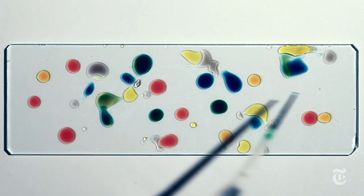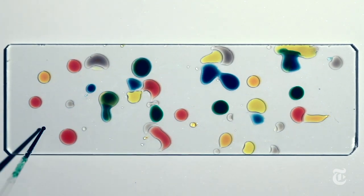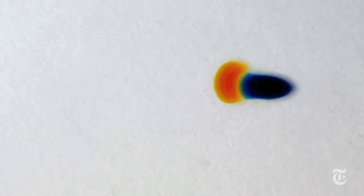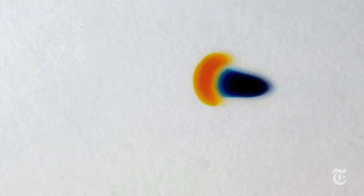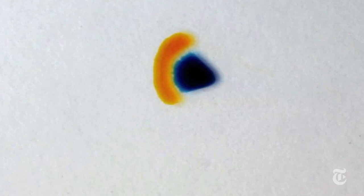Each droplet is composed of two fluids. The coloring is just to help you see what's going on. The different fluids evaporate at different rates, and they have different surface tension. And the result in each droplet is kind of a constant internal tornado.